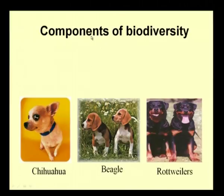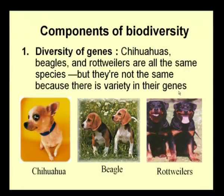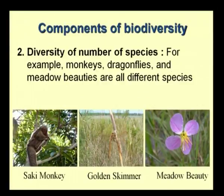What are the components of biodiversity? The first is the biodiversity of genes. For example, three varieties of dogs — chihuahuas, beagles, and rottweilers — are all the same species, but they differ because there is variety in their genes. So the first component of biodiversity is the diversity of genes.